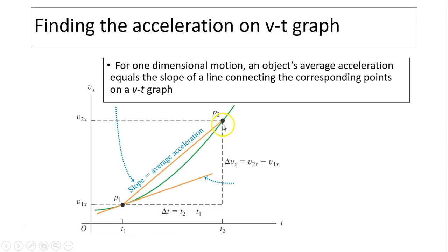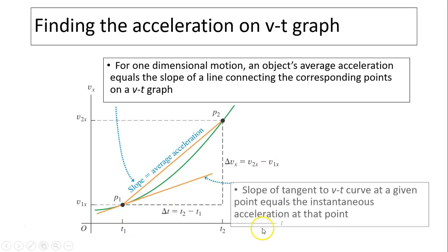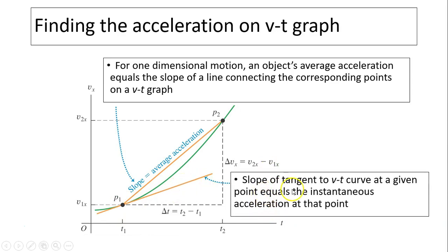To find instantaneous acceleration at P1, what we do is move P2 closer and closer to P1. Then that slope becomes the slope of the tangent. The slope of the tangent to the VT curve at a given point equals the instantaneous acceleration at that point.